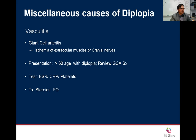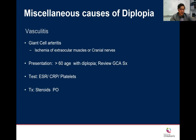Treatment for giant cell arteritis is steroids. There are newer treatments — immune modulators — that can also be used. Double vision should prompt you to include giant cell arteritis in the differential for any patient over 50, and check ESR, CRP, and platelets urgently.